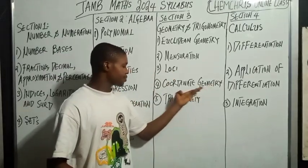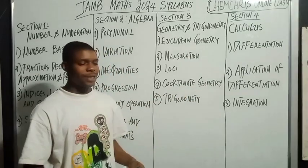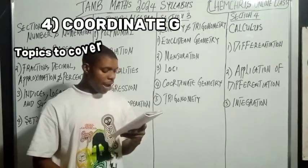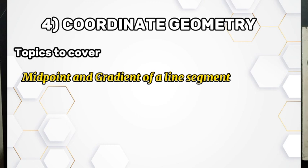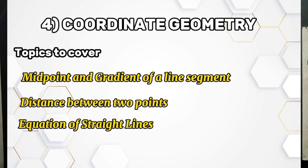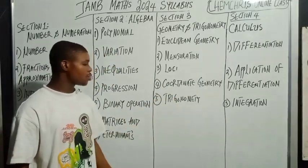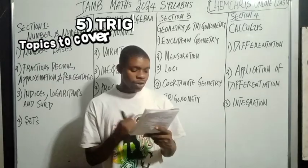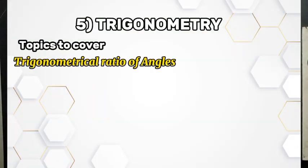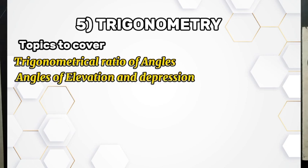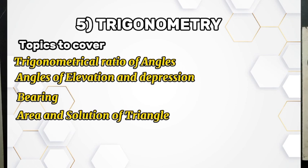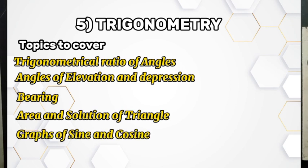Number four is coordinate geometry. The topics are: midpoints and gradients of a line segment, distance between two points, parallel and perpendicular lines, and equation of a straight line. Number five is trigonometry. The topics are: trigonometric ratios of angles, angles of elevation and depression, bearings, areas and solution of triangles, graphs of sines and cosines, and the sine and cosine formulas.